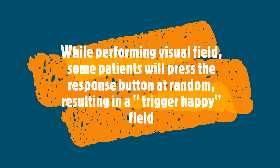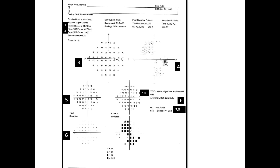While performing a visual field test, some patients will press the response button not in response to seeing a stimulus, but at random, resulting in a classical trigger-happy feel. This can be identified by 10 pointers as shown in this single field analysis printout of Humphrey visual field 24-2 SITA standard test of the right eye.